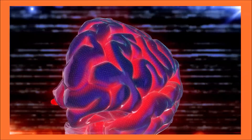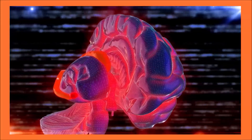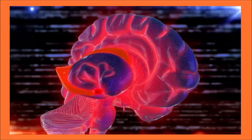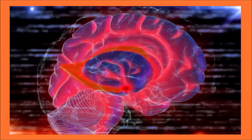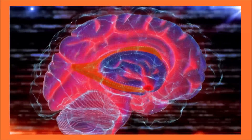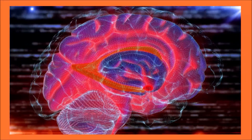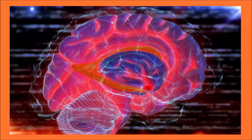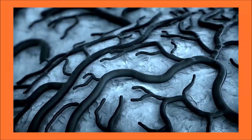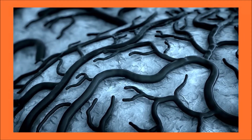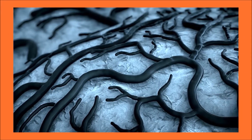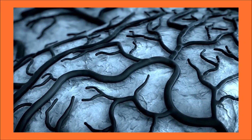The virus is primarily spread by contact with the saliva, or more rarely nervous tissue, from an infected animal. It is usually transmitted by bites when saliva from the infected animal comes in contact with broken skin or mucous membranes, such as the eyes, nose, and mouth.